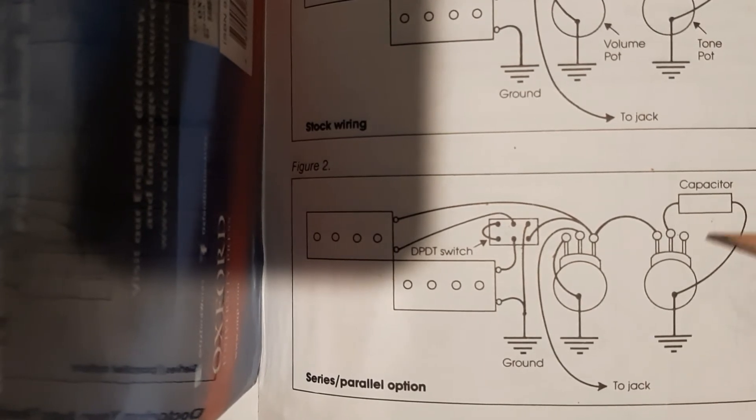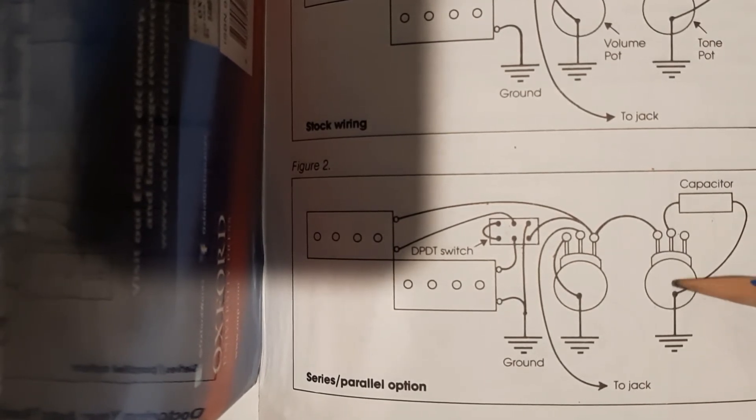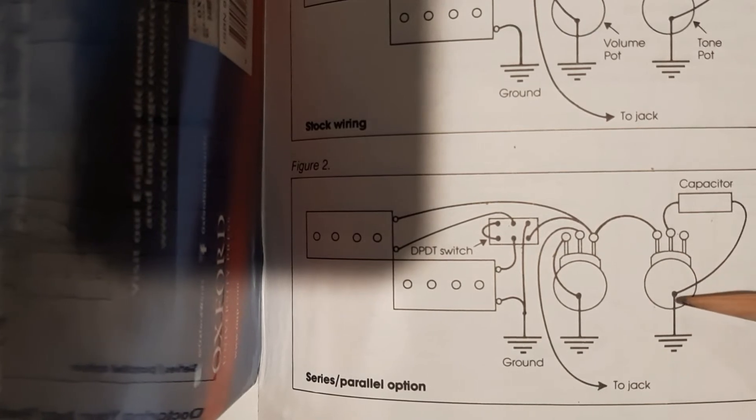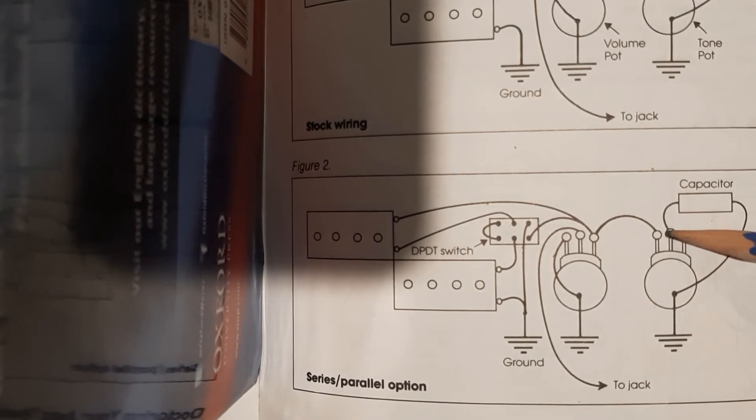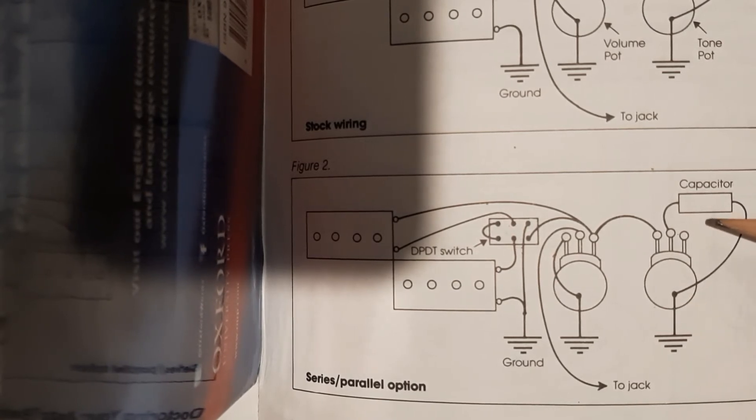As you engage this tone pot, as you add resistance to it, it takes some of the signal and takes it through this capacitor and puts it to ground. What capacitors do is they are high end filters. They filter out the highest frequencies in an audio circuit.